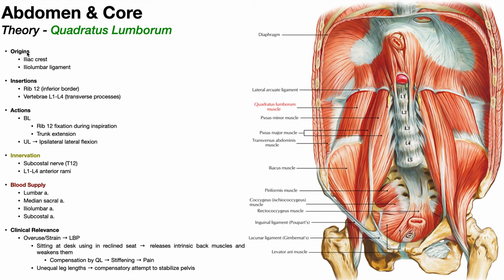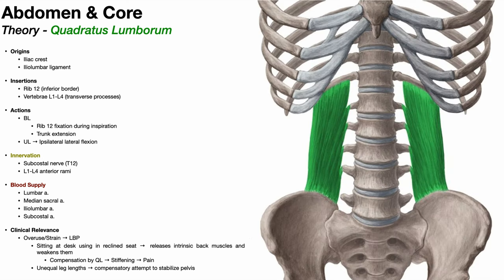The origins of the quadratus lumborum are actually inferior and the insertions are superior, so the fibers run more or less vertically upward. The origins are down at the iliac crest, and there's a little bit on the iliolumbar ligament medially, which is covered by the psoas major. Here is the muscle belly of the quadratus lumborum — it's given the name quadratus because the muscle forms a rectangular shape. The muscle fibers run vertically upward and insert on the inferior border of rib 12 and the transverse processes of vertebrae L1 through L4.